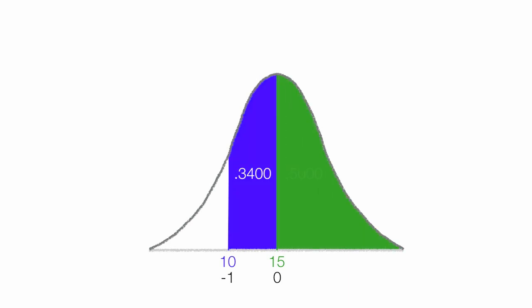The area above 15 is 0.500, because it's half the bell curve. And these two areas added together equals 0.8400, or 84%.